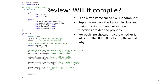Before we move on to new material, let's briefly review what we've learned about classes by playing a game called 'Will It Compile.' We have the rectangle class and a main function shown on the left, and we may assume that all functions are defined properly. We'll review each line and indicate whether it will compile, and if not, we'll explain why.